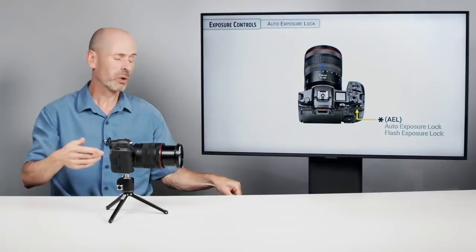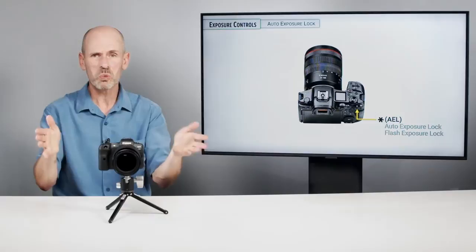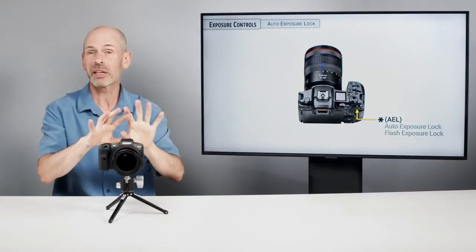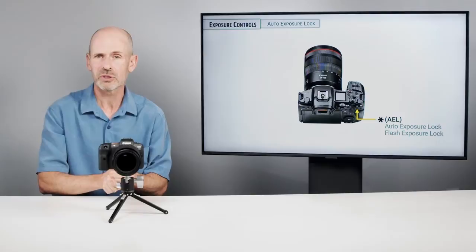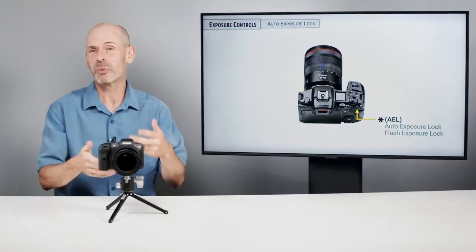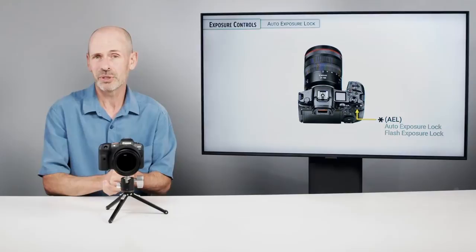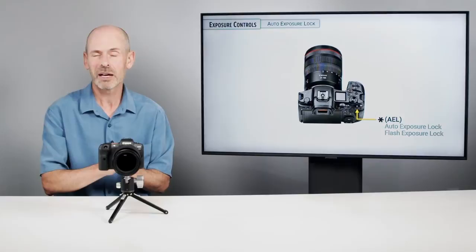A real-world example: if you're photographing a person standing beside a big window and the window is throwing off the exposure, pan the camera away from the window, lock the exposure in, recompose — so that big bright background the camera is now ignoring — and get the proper exposure for the subject. Some people don't use this feature; there are other ways like exposure compensation or manual. If you don't use it, this is a button you can reprogram on the camera to do something else — it can become a secondary focusing button, which is a very handy trick.